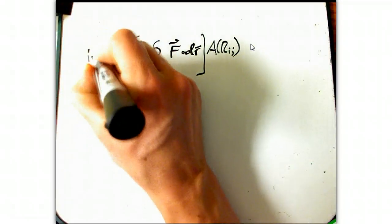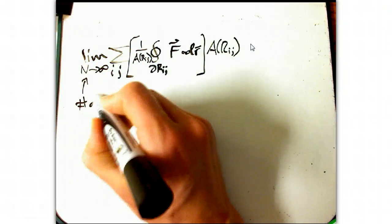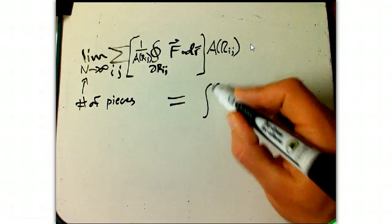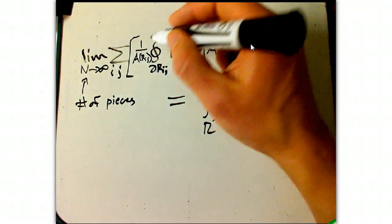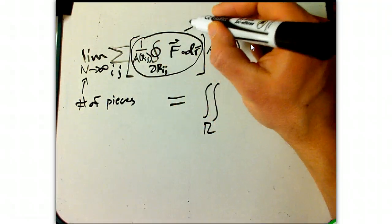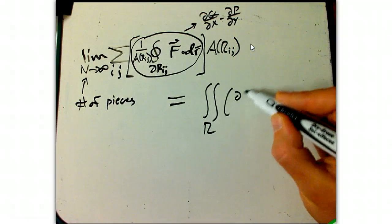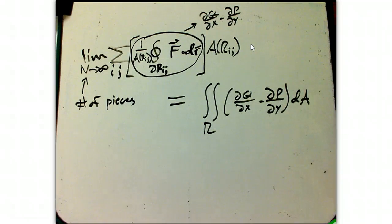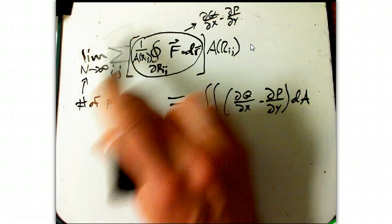And so the limit as n goes to infinity, let's say that's the number of pieces, that is going to be, that's the definition of the integral over R, the whole of R, of this function. But as the limit, as you take these, the limit of these guys getting smaller, this guy turns out to go to dq/dx minus dp/dy. And it's actually a pretty, it's really not a bad calculation to show that. There's a couple ways, different ways to show it, but you just kind of crank it out, actually. And so in the limit, this quantity is going to this guy.